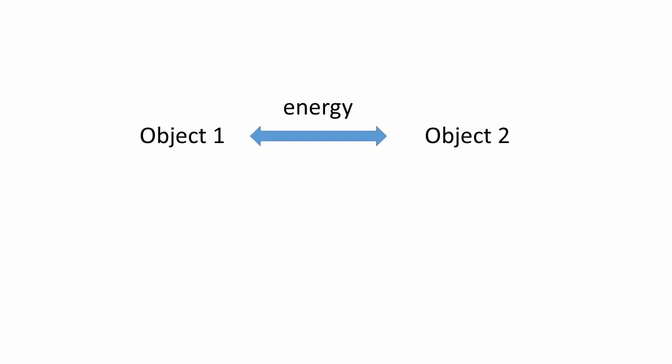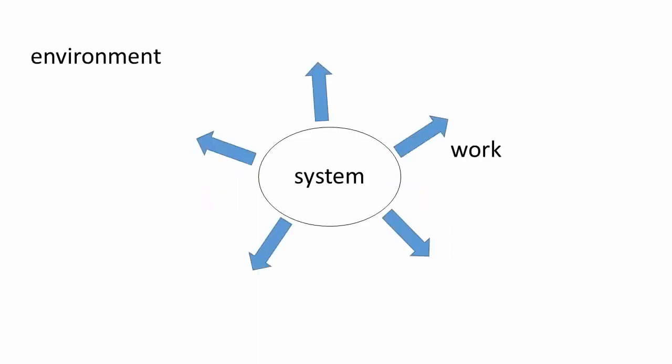Up to this point, we have focused our attention on the transfer of heat, Q. It is one of the two ways energy can be transferred between two objects. The other form of energy transfer is work, W. If the system does work, the energy change is negative. If work is done on the system, the energy change is positive. The system's energy really does not care if it gains or loses energy in the form of work or heat — it's all the same.